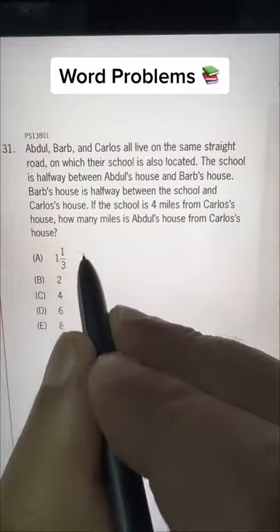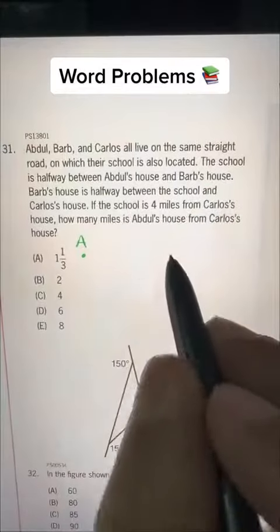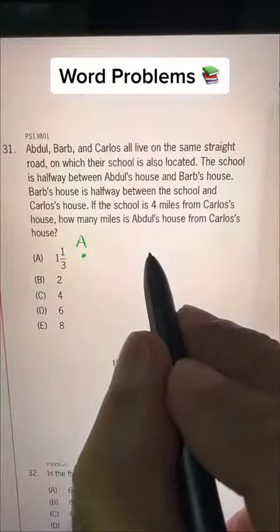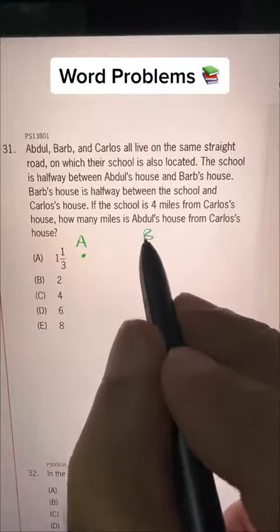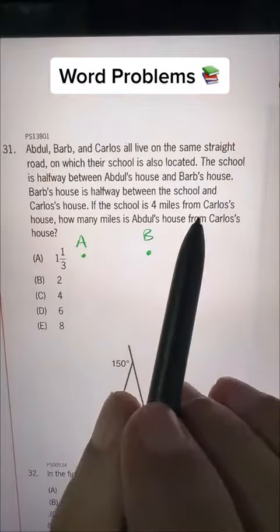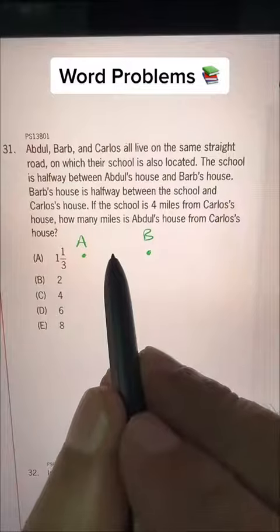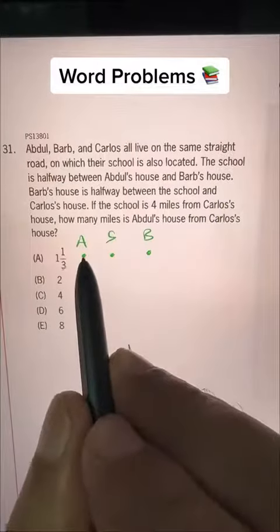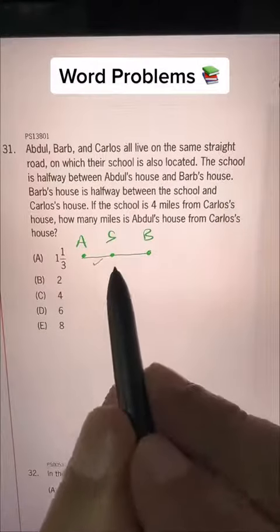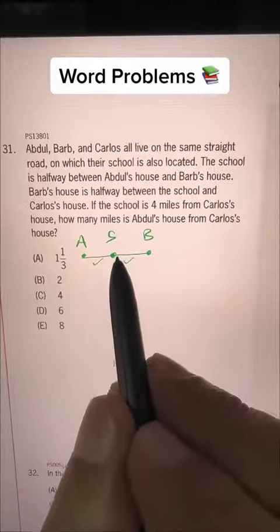So if this point is A, Abdul's house, and let's say this point is B, Barb's house, school is halfway between them, so this is S. They are in a straight line. So this and this, these two distances are the same.